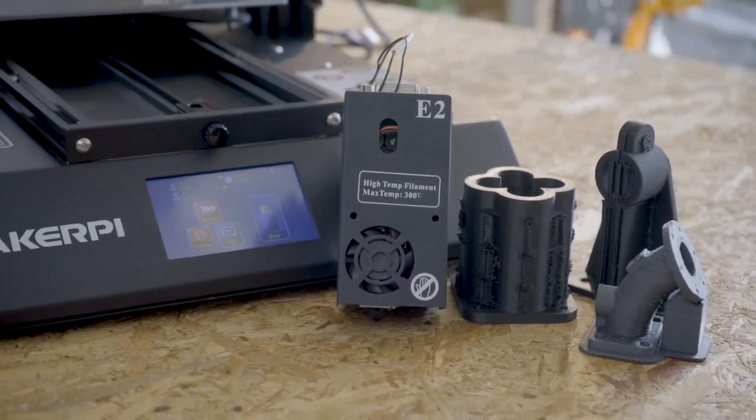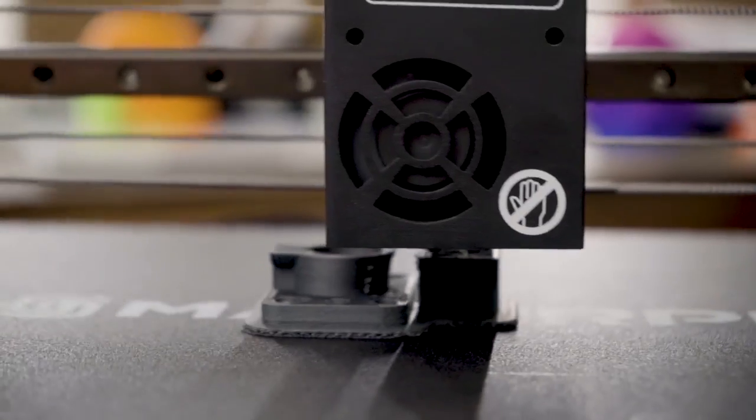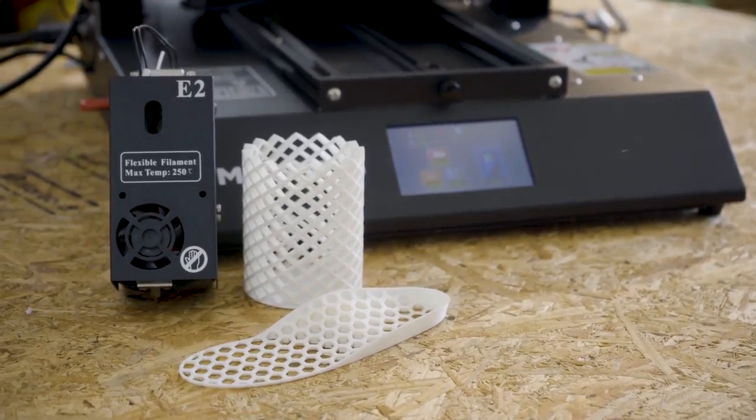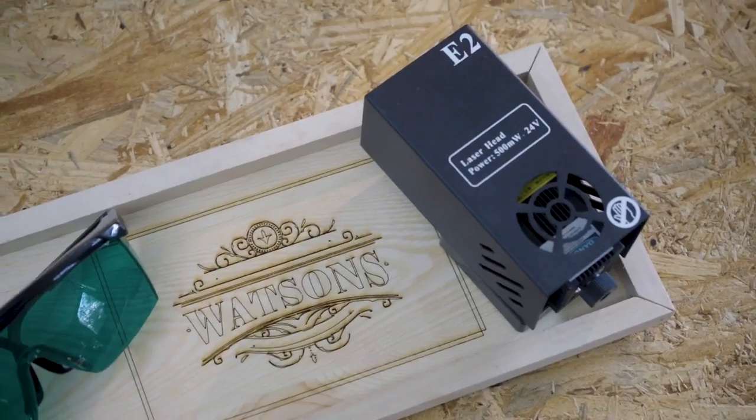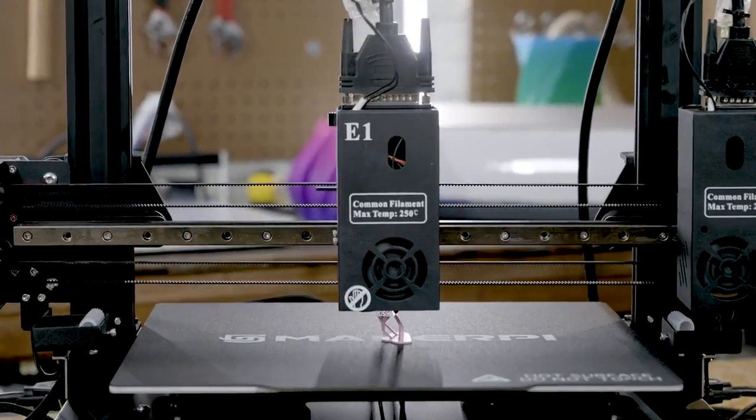It includes an all-metal high-temperature extruder with a hardening steel nozzle, a dual-gear extruder with flexible filaments, and a laser engraving head, all in one device.